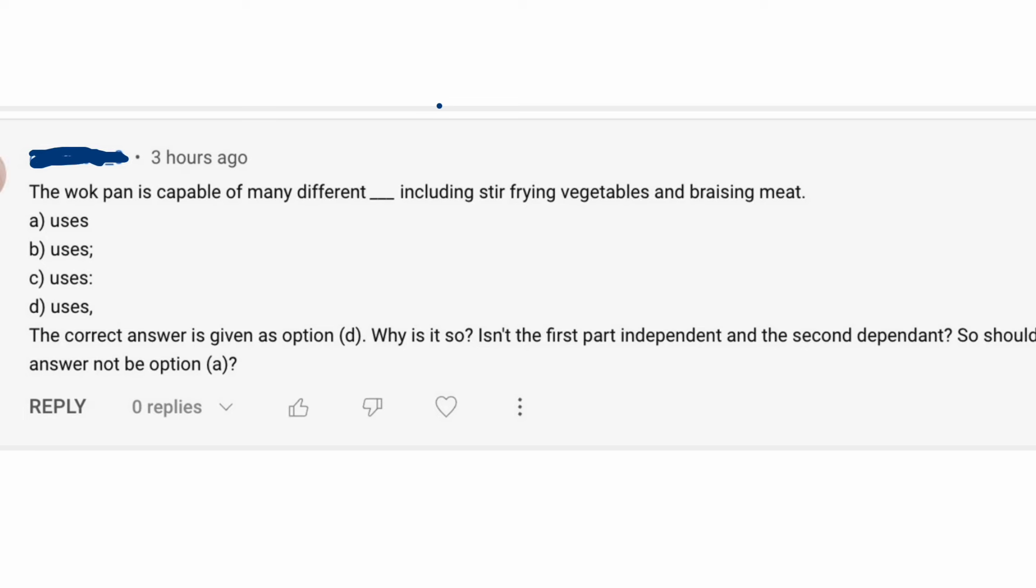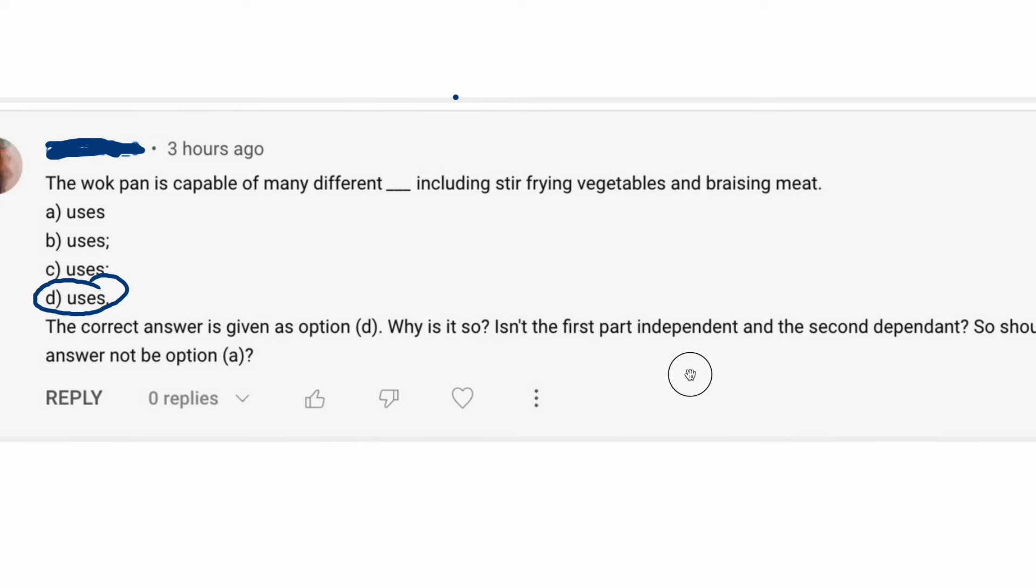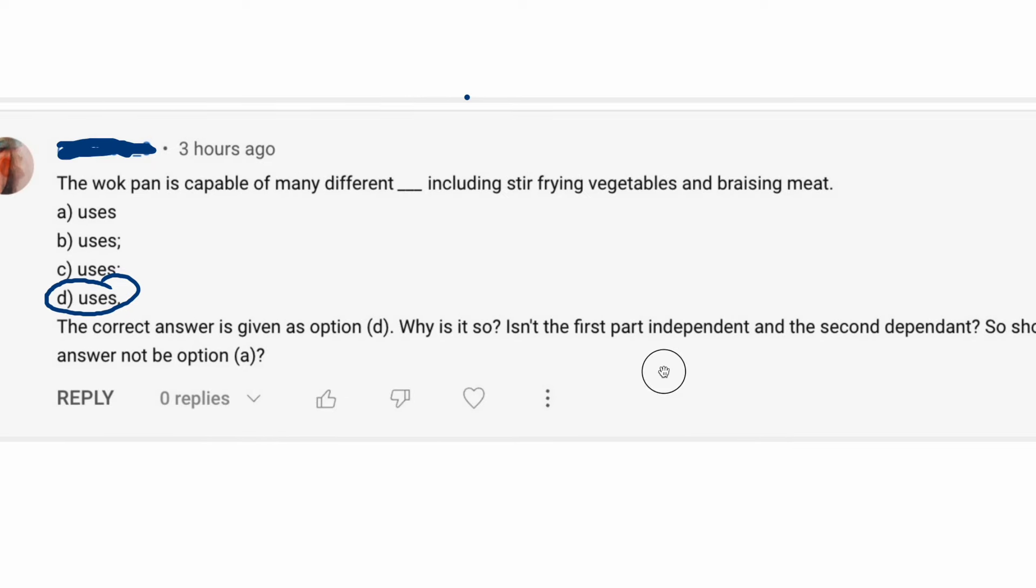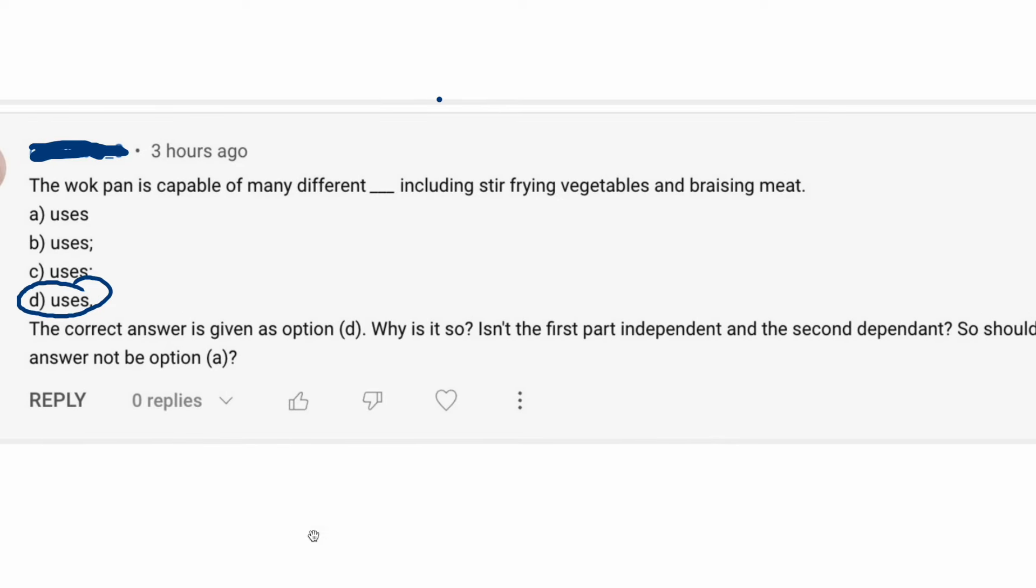So the first one here is as follows. The wok pan is capable of many different blank, including stir-frying vegetables and braising meat. And here, the answer, I'll just go ahead and tell you that the answer is going to be D, as it says. But the question is, why is it so? Isn't the first part independent and the second dependent? So should the answer not be option A.